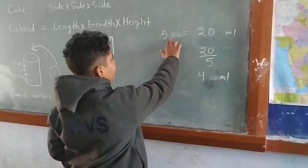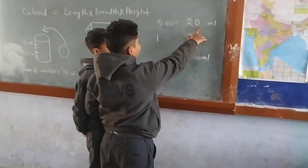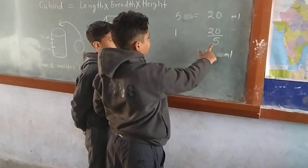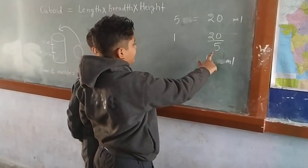So, 5 marbles equal 20 ml. One marble equals 20 divided by 5, which is 4 ml.